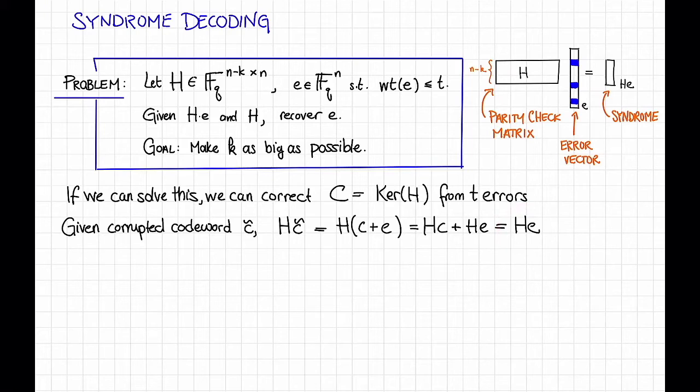and also the parity check matrix H, we can recover the error vector E. And then we can just compute the original code word as C twiddle minus E. We saw this paradigm earlier in our decoder for Hamming codes, and the same paradigm is also used by the Berlikamp-Massey algorithm for Reed-Solomon codes.